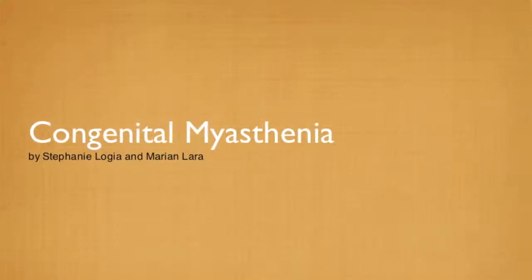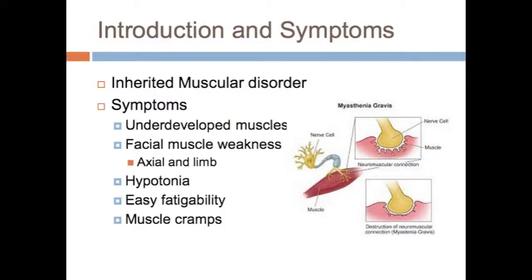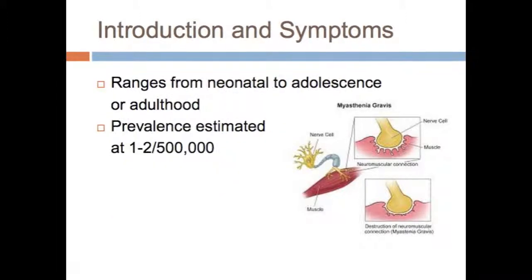Congenital Myasthenic Syndrome, or CMS, is an inherited neuromuscular disorder characterized by underdeveloped muscles, facial muscle weakness affecting the axial and limb muscles, hypotonia, easy fatigability, and muscle cramps. CMS has an onset that ranges from the neonatal period up until adolescence or even adulthood.